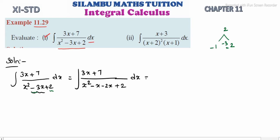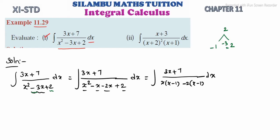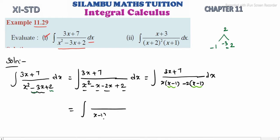Integrating the numerator (3x + 7) divided by — in the first two terms we have x common, giving (x minus 1), and in the two-term we have minus 2 common giving (x minus 1) — so the denominator becomes (x minus 1) into (x minus 2), into dx.